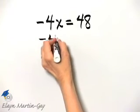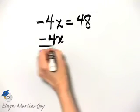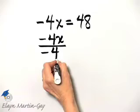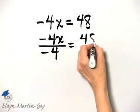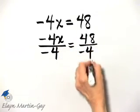So on the left side, I'm going to divide by negative 4, and if I do so on the left side, I've got to do so on the right side also.